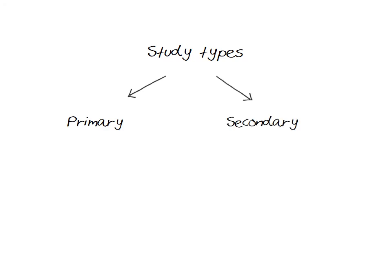Another way of grouping studies is to talk about primary studies and secondary studies. The term primary study means a single study and includes all the types of studies mentioned so far, such as RCTs, cohort studies, and case control studies. Secondary studies, or systematic reviews, collect and combine the results of several individual primary studies together.